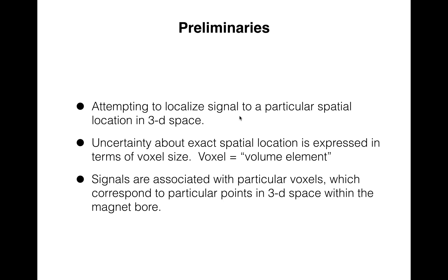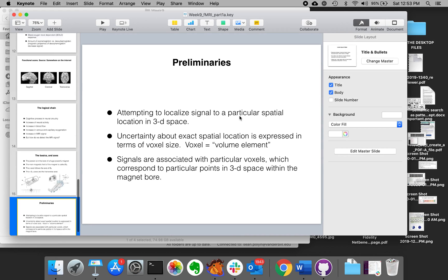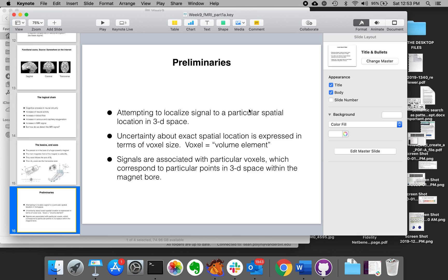The goal is to localize these brain signals to particular spatial locations in a 3D space — the space that the head occupies inside the bore. This is done by carving up that space into what are called voxels, or volume elements. Just like a TV screen is made up of pixels — picture elements — instead of a 2D array of squares, we've got a 3D array of cubes. The goal is to associate signals and changes in signals with particular voxels, particular points in the 3D space inside the magnet bore.